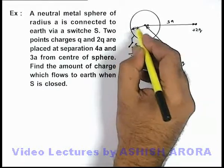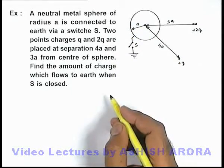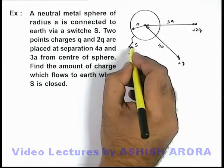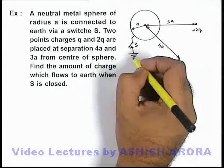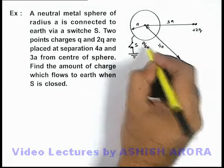Here we are given that the radius of this sphere is a, and we know if the switch S is closed, to maintain the sphere at zero potential earth will supply a charge q_e onto it.